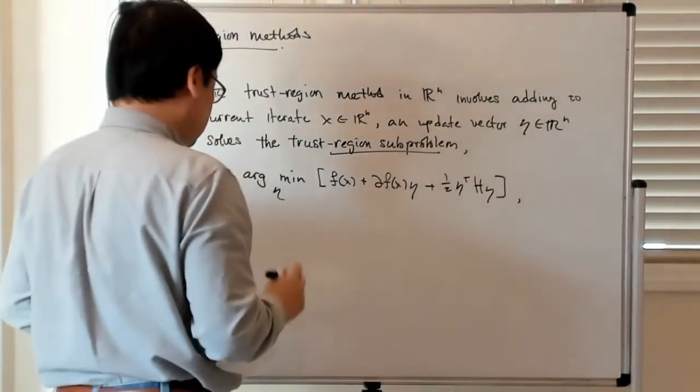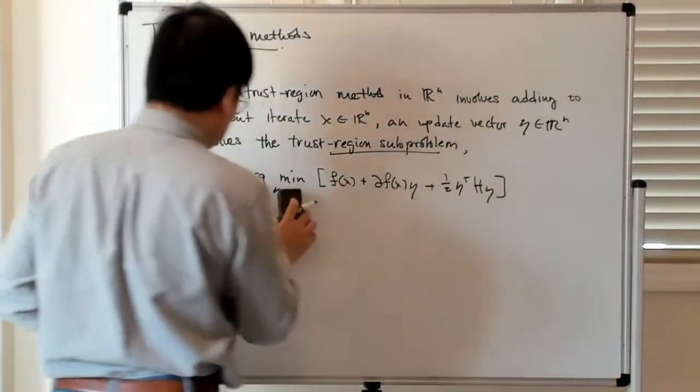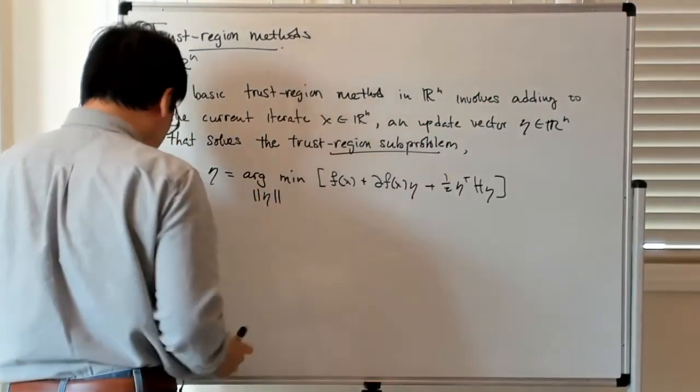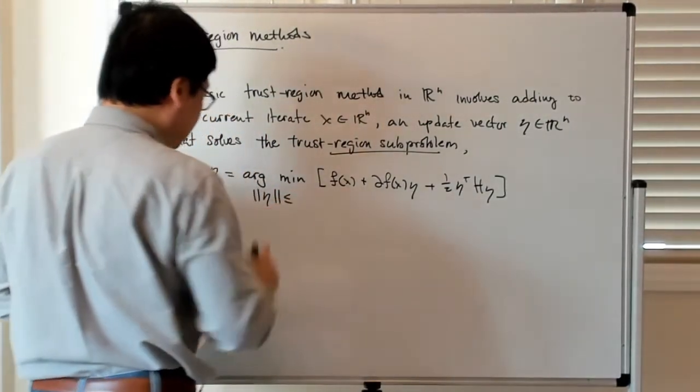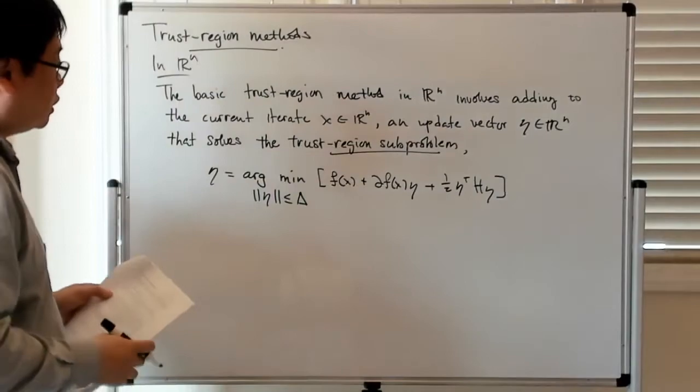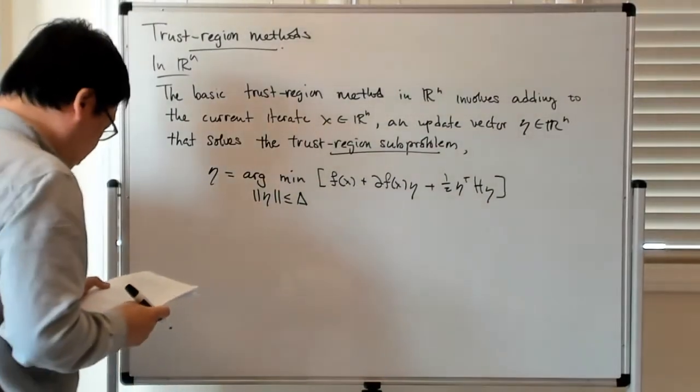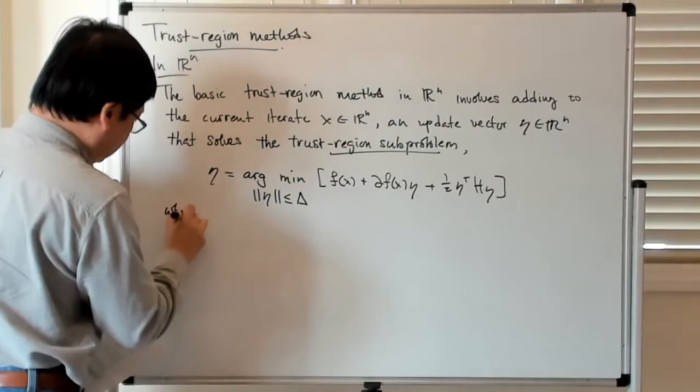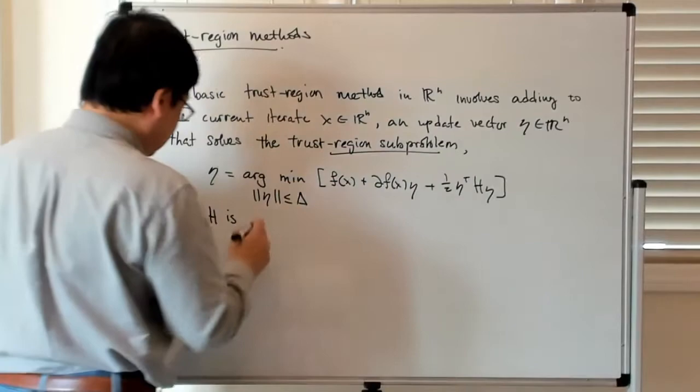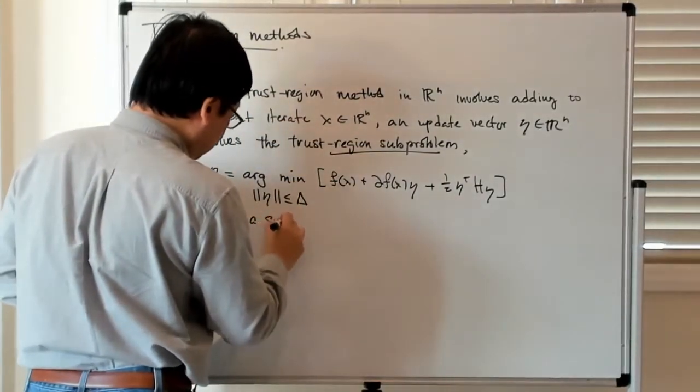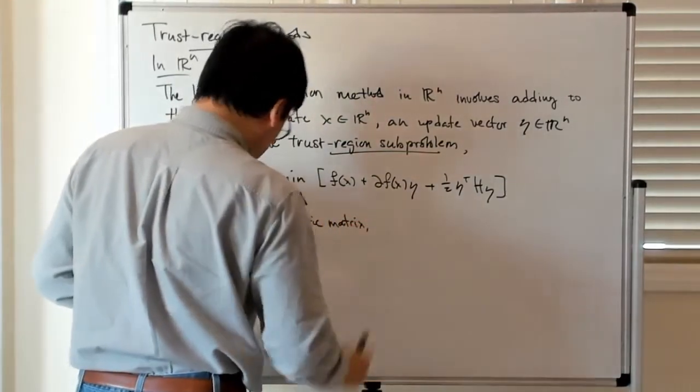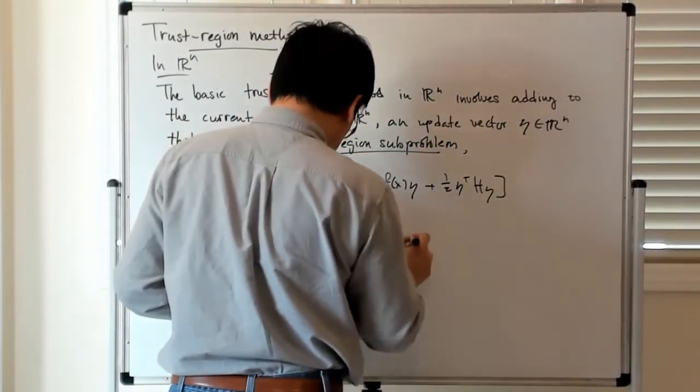But we have a constraint that this vector is in some ball, actually it's in a ball of radius delta about the origin. Where H is a symmetric matrix and delta is the trust region radius.